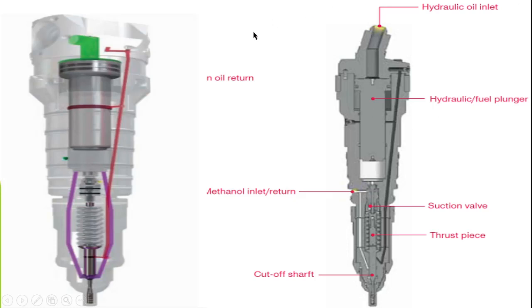How does it look and how does it work? Basically, there is a hydraulic oil piston-type arrangement inside a casing like a liner — it's a hydraulic fuel plunger unit. The hydraulic oil comes in from the top. There is one line called the sealing oil return line. The oil goes up and lifts the plunger against the spring, causing injection.